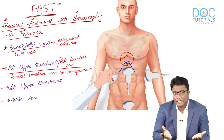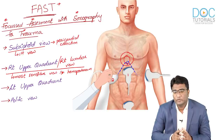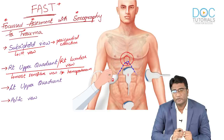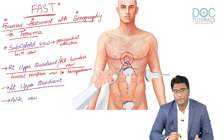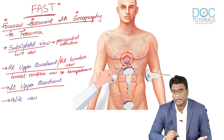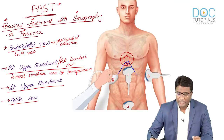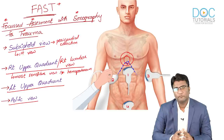The first view is the subxiphoid view and the most sensitive for hemoperitoneum is the right upper quadrant or right lumbar view, evaluating for fluid in Morrison's pouch. The left upper quadrant view is done to look at the perisplenic area and left paracolic gutter. We also take pelvic views in transverse and longitudinal planes at the suprapubic region to look for pelvic hematomas or collections around the bladder. These four views form FAST.